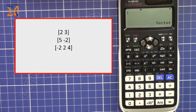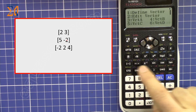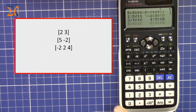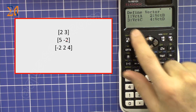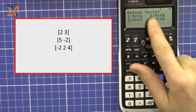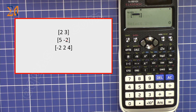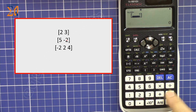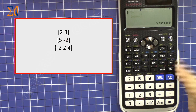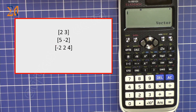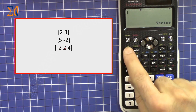Now I'm going to store the second vector into memory. Press Option, number 1 (Define Vector). At this point select vector B, which is number 2. The dimension is 2. I'm pressing 2, so enter 5 then equal sign, then minus 2, then equal sign. The second vector has also been created.